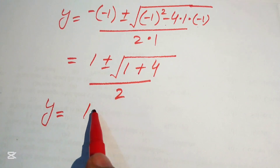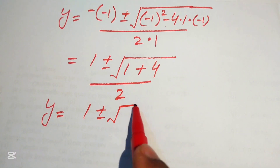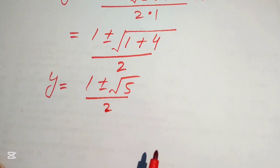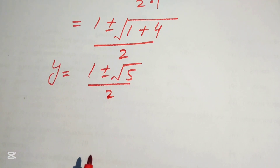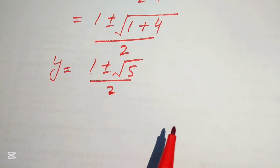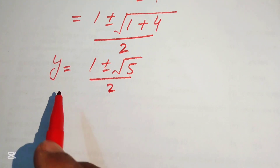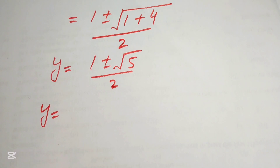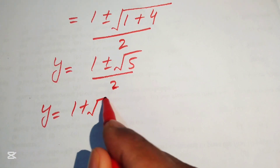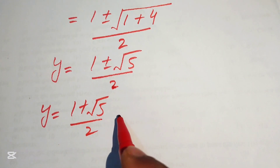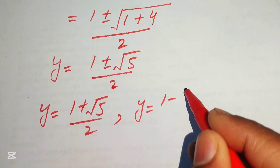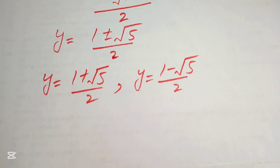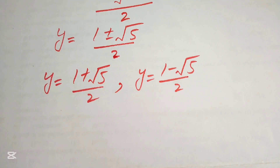After simplification, y equals (1 ± √5) / 2. These are the two values of y. The positive value is y = (1 + √5) / 2, and the negative value is y = (1 − √5) / 2. Now we back-substitute y = (5/3)^m.